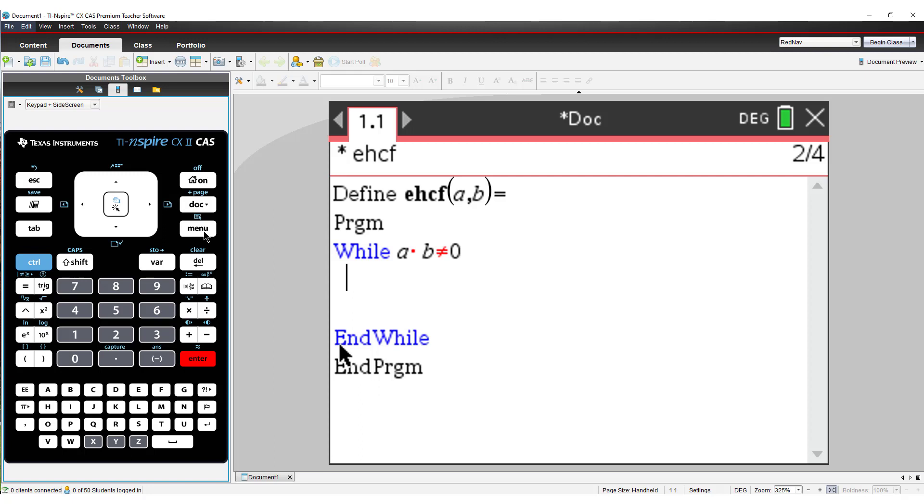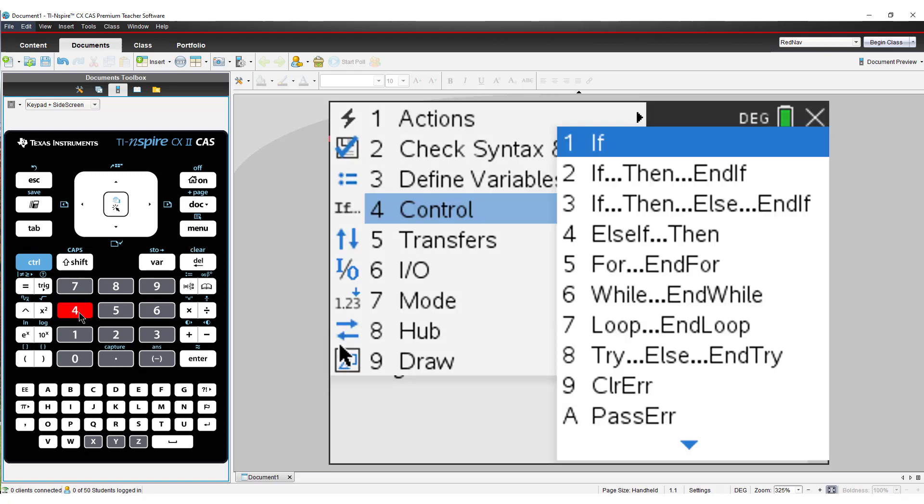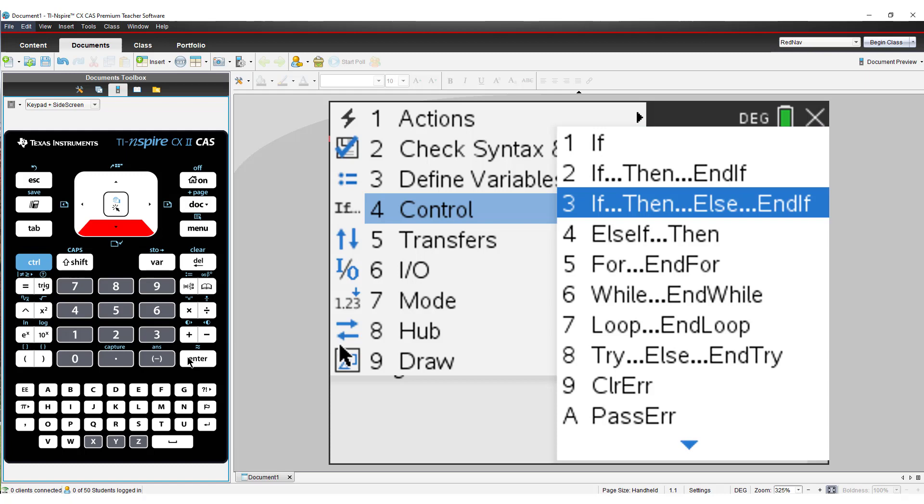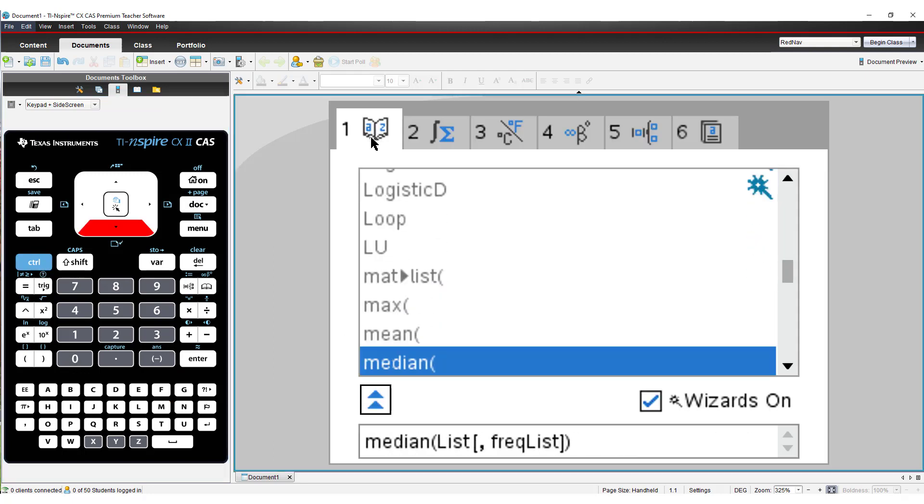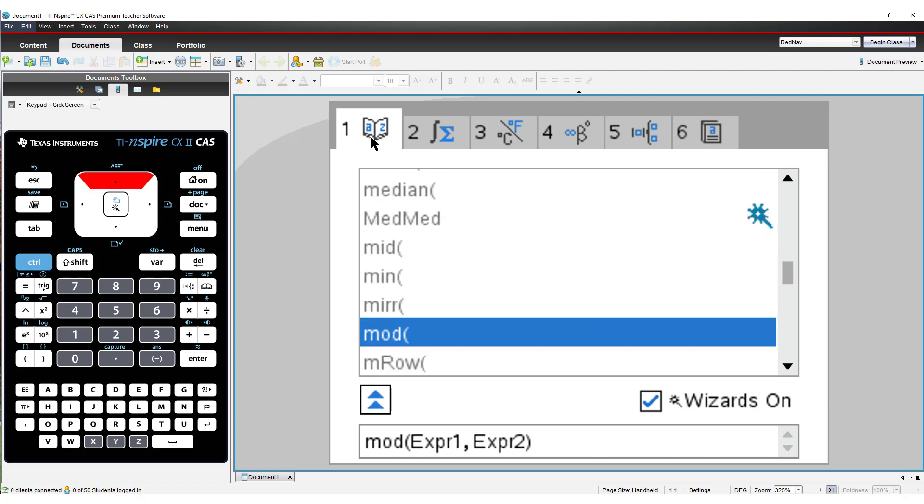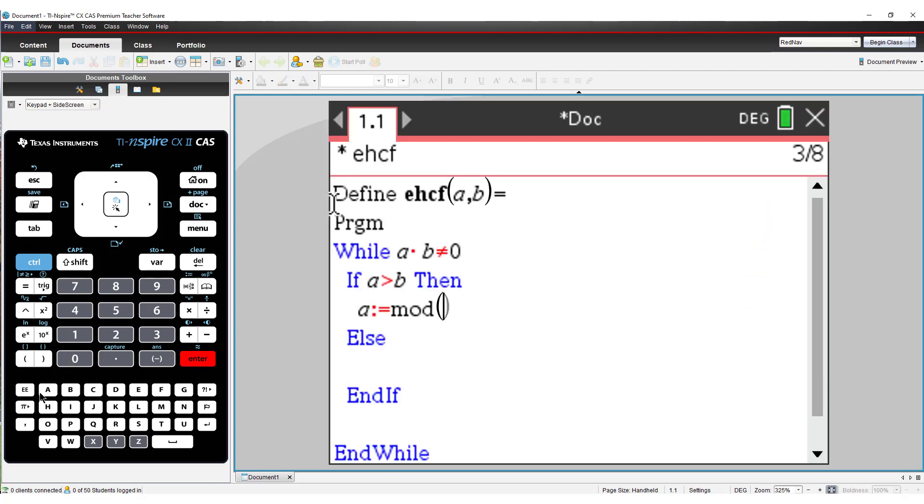Now we need to find the remainder when the larger number is divided by the smaller. We can use the IF statement to test if a is bigger than b. So if a is bigger than b, then we need to replace a with the remainder when a is divided by b. We can do this using the mod or modular arithmetic command. If a is not bigger than b, then we need to replace b with the remainder of b divided by a.